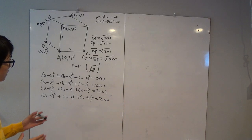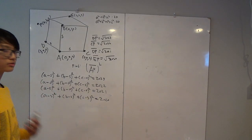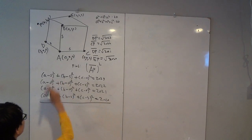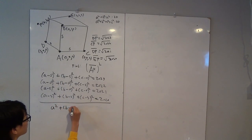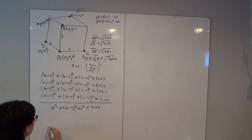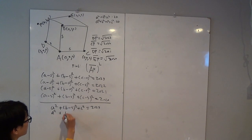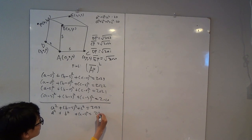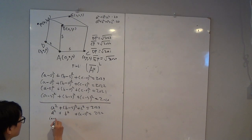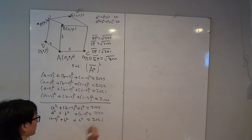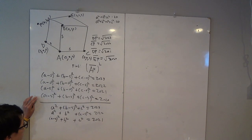To clean up these equations, I'll remove all the minus-zero terms, since a − 0 is just a. The first equation becomes a² + (b−S)² + c² = 2023; the second becomes a² + b² + (c−S)² = 2022; the third becomes (a−S)² + b² + c² = 2021; and the fourth equation stays the same.